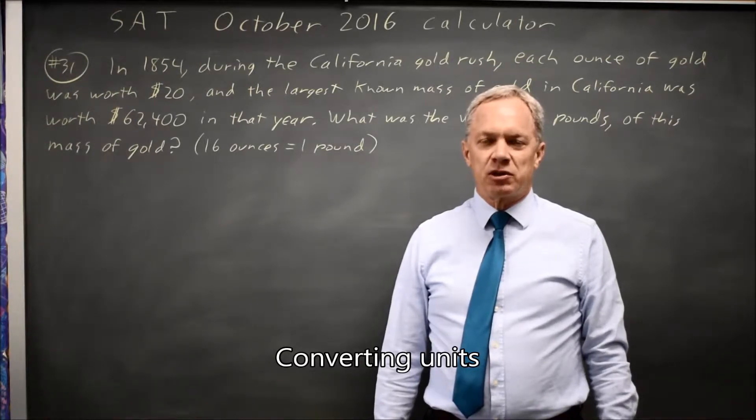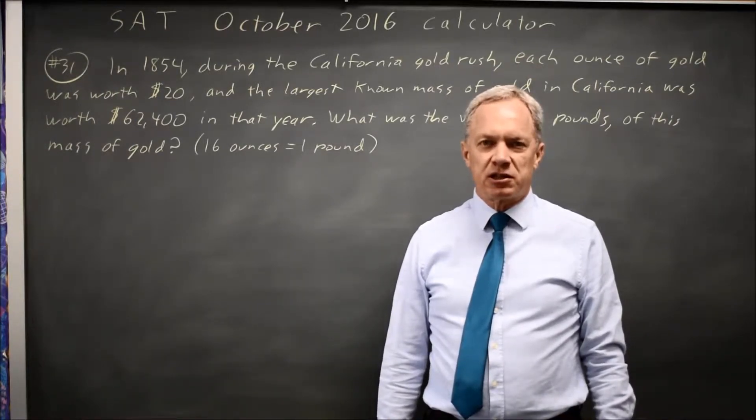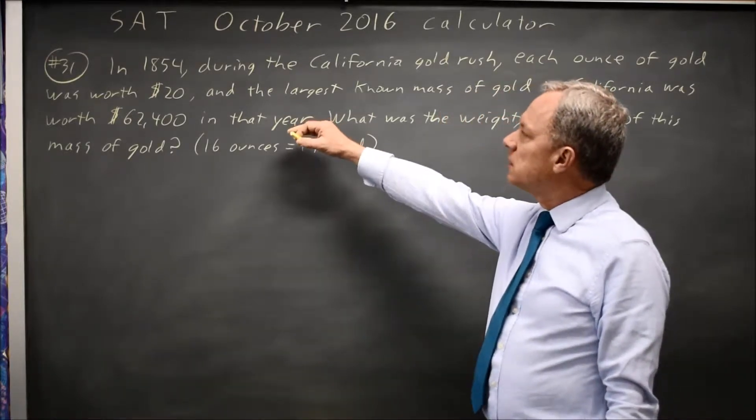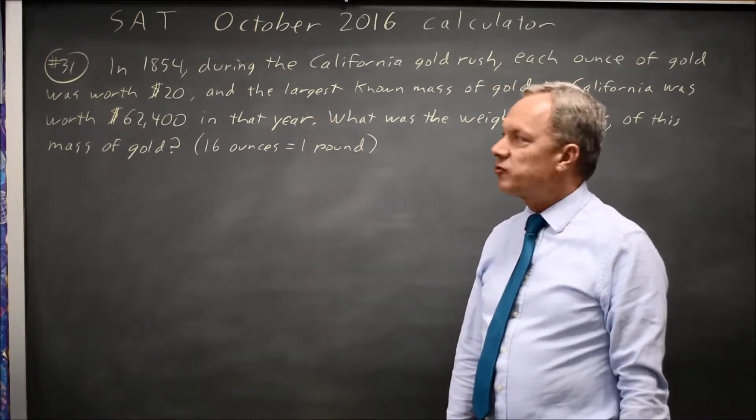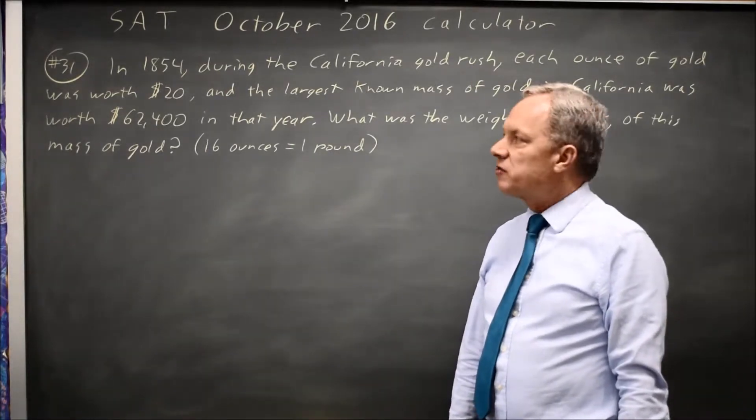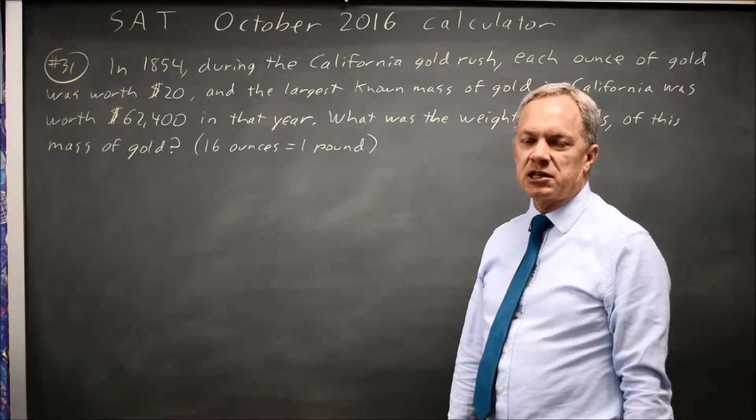This is calculator question number 31 from practice test 7, which is the October 2016 SAT. College Board tells us about a lump of gold found in California in 1854, and they give us the dollar value and the price of gold per ounce and ask for the weight of this gold in pounds.